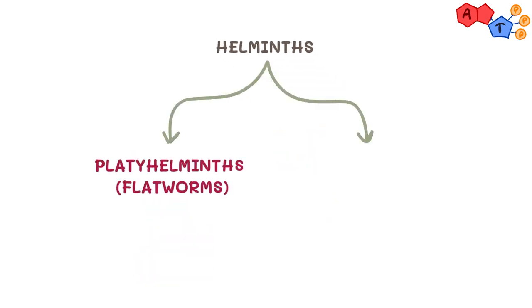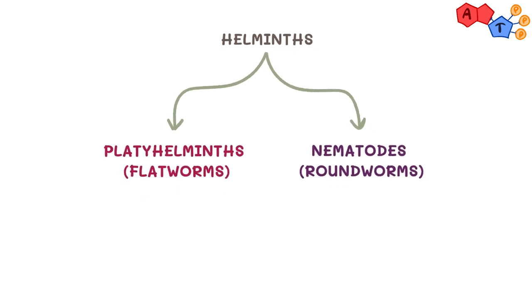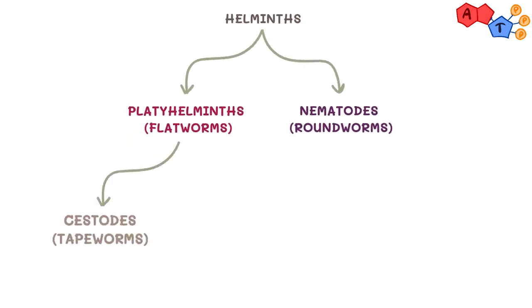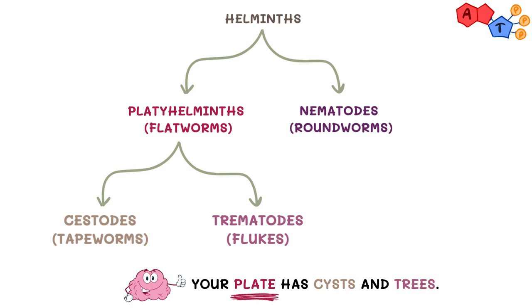Generally speaking, we can divide helminths into two big groups: platyhelminths, which are also known as flatworms, and nematodes, which are known as roundworms. Platyhelminths can be further subdivided into cestodes, which are known as tapeworms, and trematodes, which are known as flukes. One way to better remember them is: your plate has cysts and trees — plate for platyhelminths, cysts for cestodes, trees for trematodes. Weird and gross, I know, but it helps.